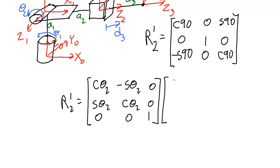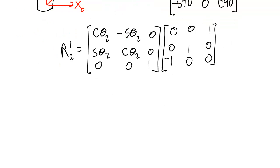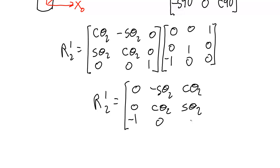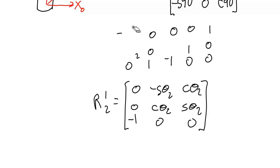The cosine of 90 is 0, and the sine of 90 is 1, so this entry will be negative 1. Lastly I do the multiplication, and we're done with the rotation matrix from one to two. I'll set that matrix aside so we can use it later on.